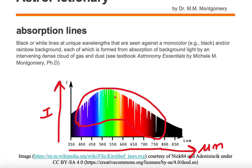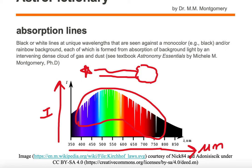The absorption is the taking away of this background light, which is this rainbow of color. The unique lines come from the cloud — we have an intervening cloud and a distant star. The light from the distant star is being absorbed by the intervening cloud, and you're observing it from the foreground.